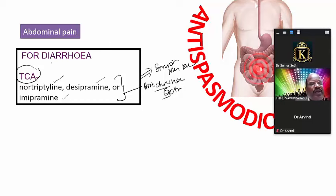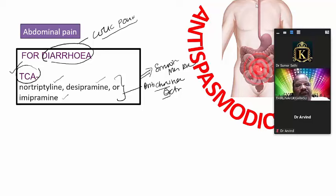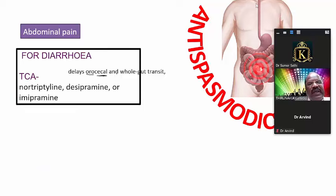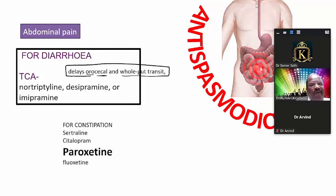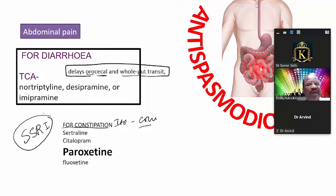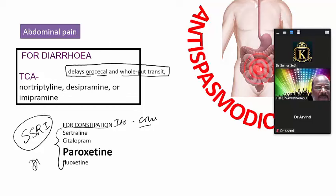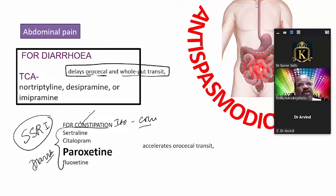In diarrheal IBS patients with colic spasm, tricyclic antidepressants are preferred because they delay orocecal and whole gut transit time, thereby managing both diarrhea and spasm. For constipation-dominant IBS with colic pain, SSRIs like sertraline, citalopram, or paroxetine can be tried. Paroxetine is most commonly used — its known adverse effect of causing diarrhea makes it useful for constipation-dominant IBS, and it also relieves stress-related spasm.